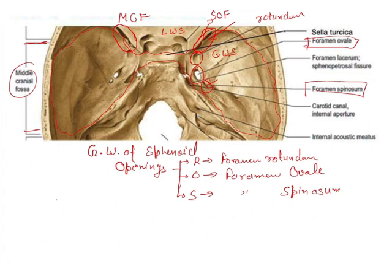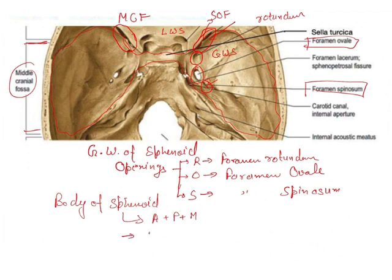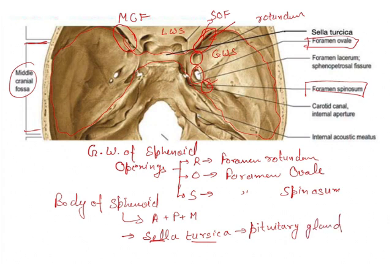The body of sphenoid is present in all three fossae — anterior, posterior, and middle. There is a depression known as the sella turcica, present in the body of the sphenoid in the floor of the middle cranial fossa. The function of the sella turcica is to house the pituitary gland. It is not seen in the wings of the sphenoid; it is seen in the body of the sphenoid.